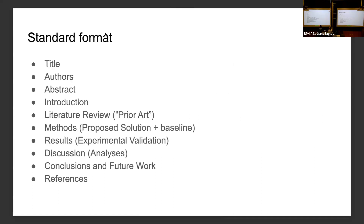Your project report can be written as a research paper if you want to submit it for publishing and if your project is novel. The standard format for a paper includes: title, authors, abstract, introduction, literature review, methods, results, discussion, conclusion, future work, and references.